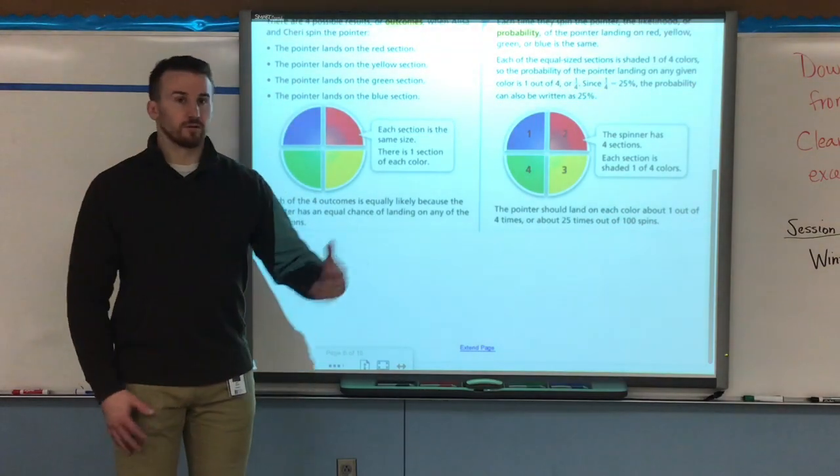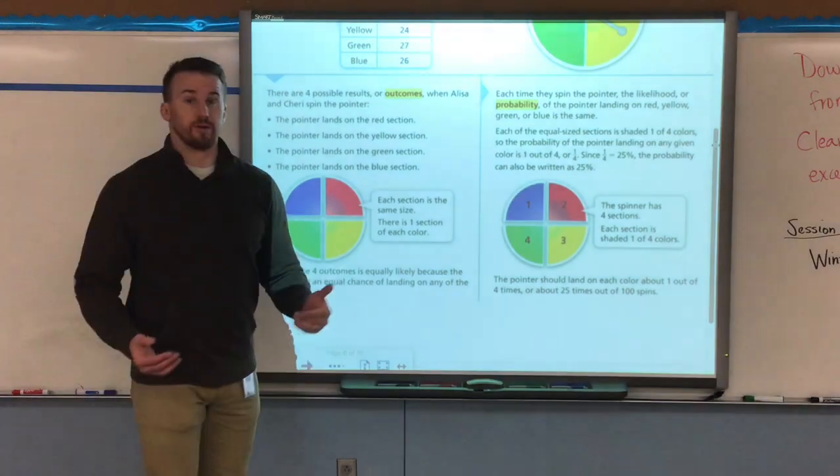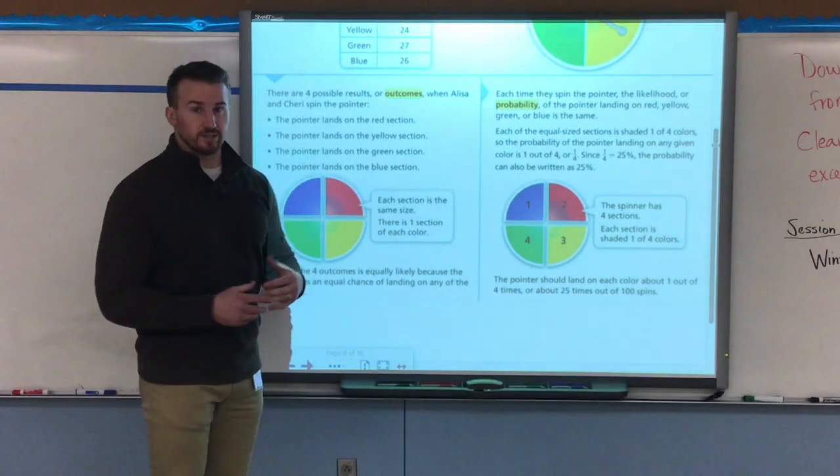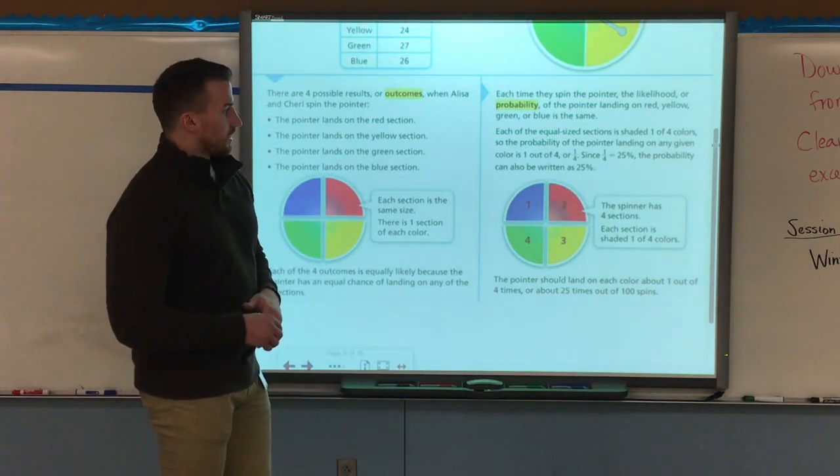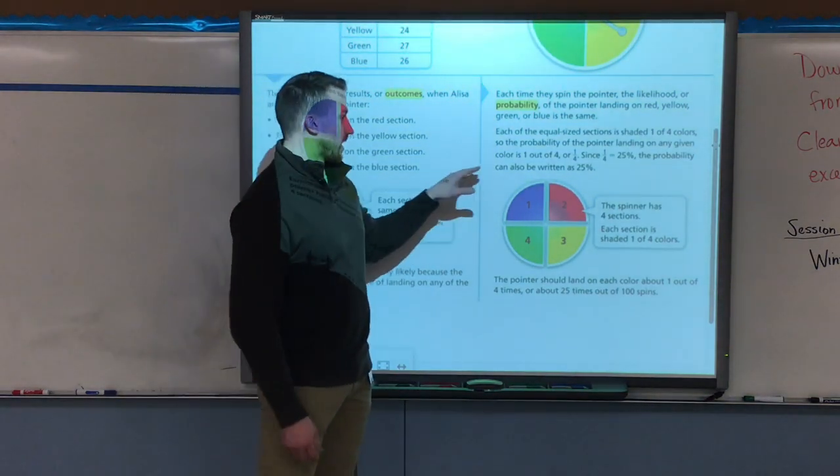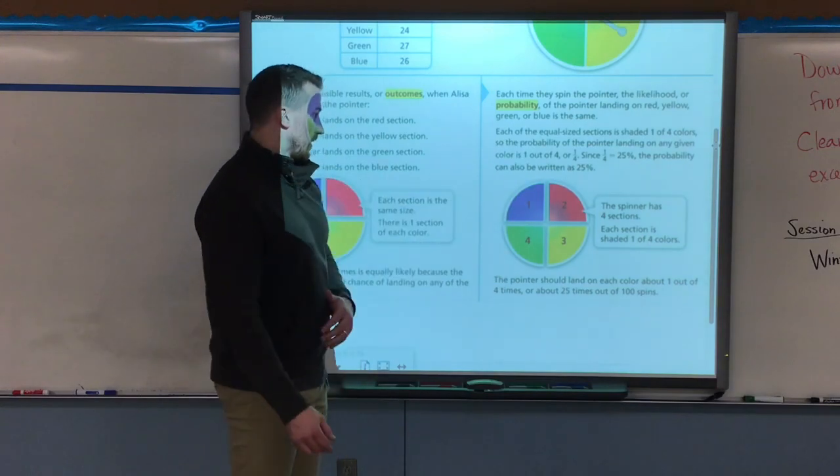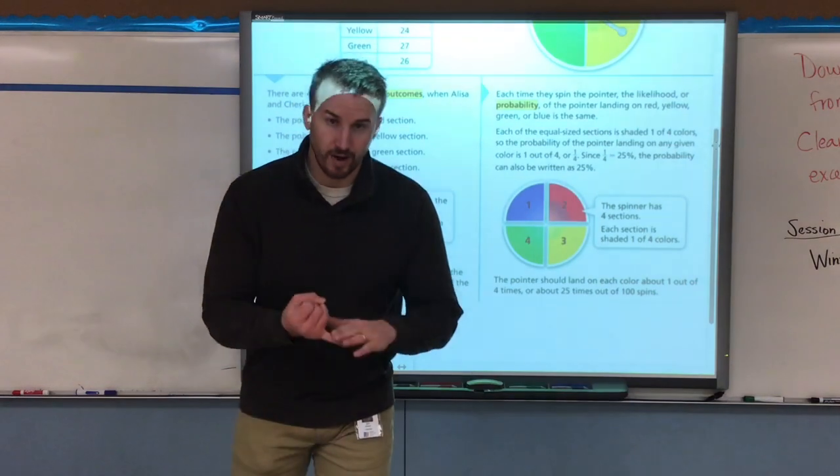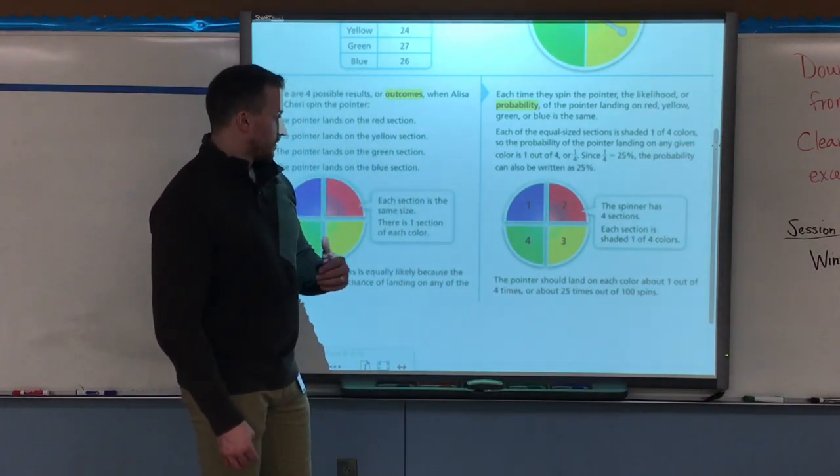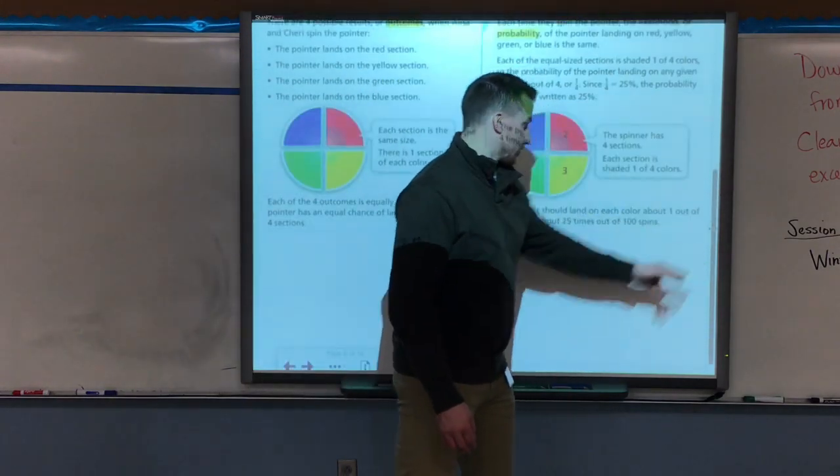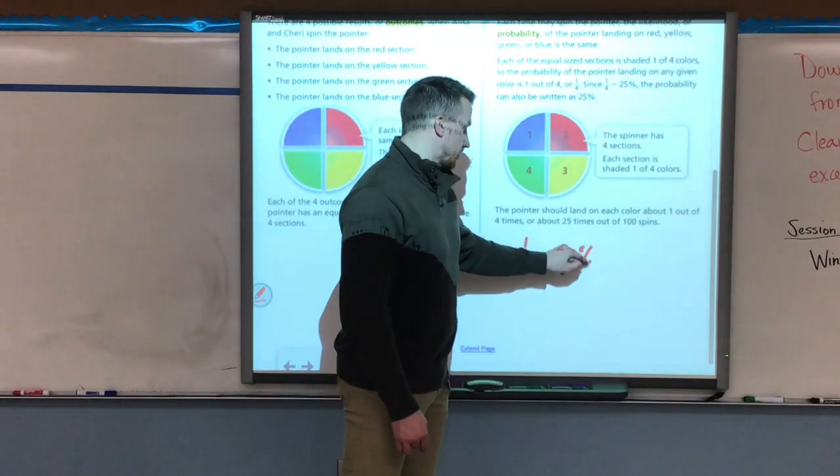Each time they spin the pointer, the likelihood or probability of landing on red, yellow, green, or blue is the same because they're the same size. Each of the equal size sections is shaded one of those four colors, so the probability of landing is one out of four or one fourth. For probability we're going to use a lot of fractions. Since one fourth is 25%, we can also write probability as a percent. The pointer should land on each color about one out of four times or about 25 times out of 100 spins, and if we looked at our results that's what we ended up getting. So it'd be one fourth which is equal to 25% of the time.